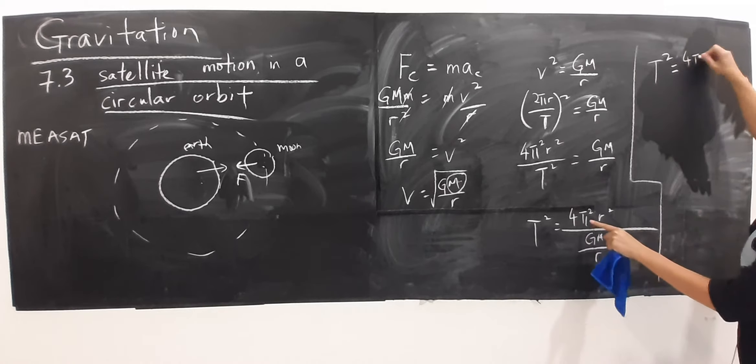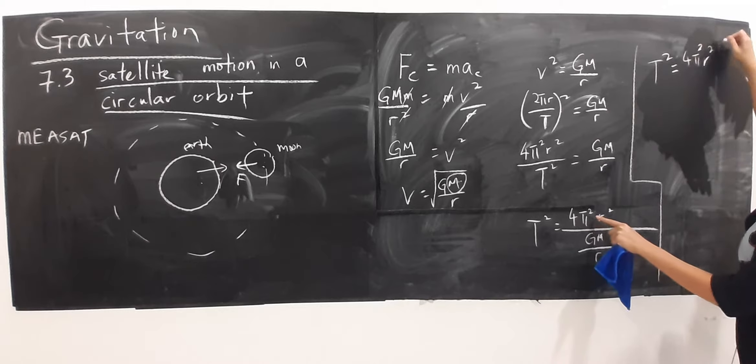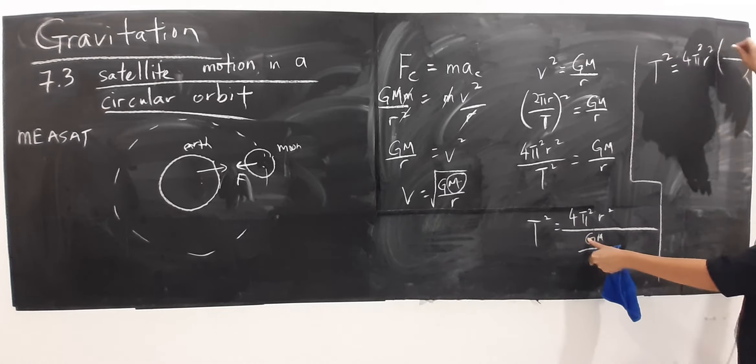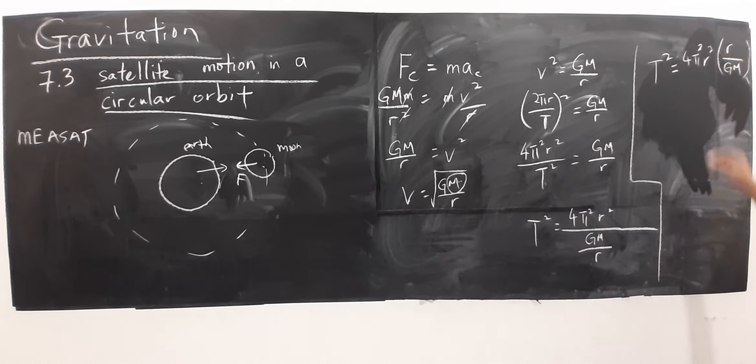Bahagi, saya kan tadi kan darab lah. Jadi kalau saya darab, fraction ni inverted. Begini. Dan apa? Kalau saya simplify. R square, darab dengan R, saya dapat R cube. R cube yang bahagi GM, betul?